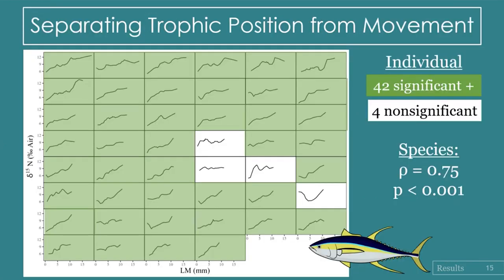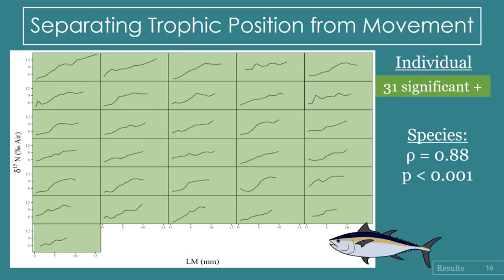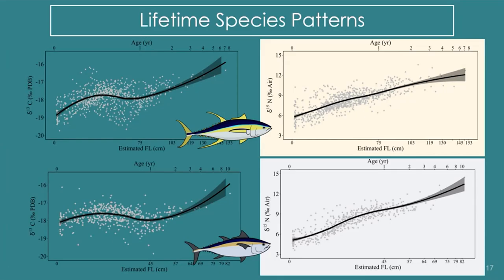These are the delta nitrogen individual profiles for yellowfin tuna. Using the same Spearman rank correlations, you can see these profiles already look much more linear than the delta carbon profiles, and the majority of individuals have significant positive correlations between delta nitrogen and laminar midpoint. The same holds for blackfin tuna — in fact, all of our blackfin tuna individuals had significant positive correlations. The smooth curves reinforce this, with delta nitrogen increasing throughout the whole profile.